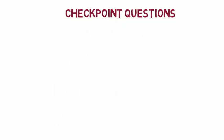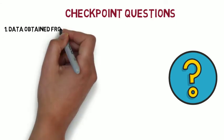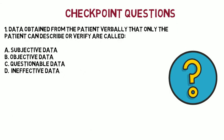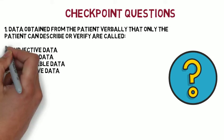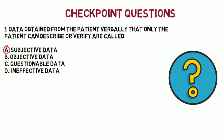Question 1: Data obtained from the patient verbally, that only the patient can describe or verify, are called what? A. Subjective data, B. Objective data, C. Questionable data, D. Ineffective data. The correct answer is A — Subjective data — because this is what the patient is telling you. For example, if the patient tells you they have a headache, there's no way you can verify that as the nurse.